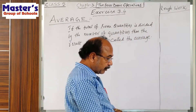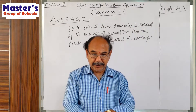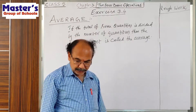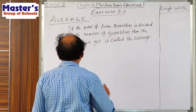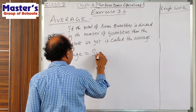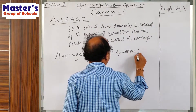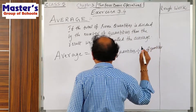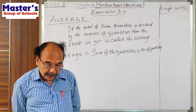So, to get the average, we find the sum of the quantities and divide that sum by the number of quantities. Then we get the average. As a statement, let us mention this: the average is equal to the sum of the quantities divided by the number of quantities.